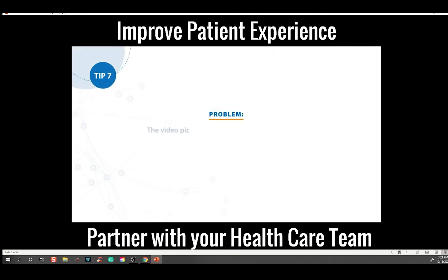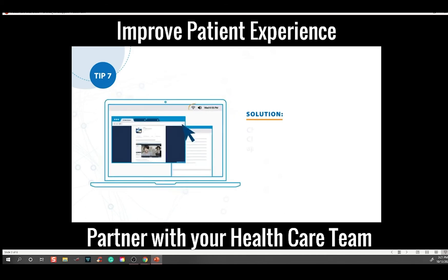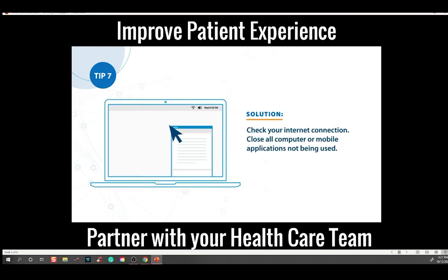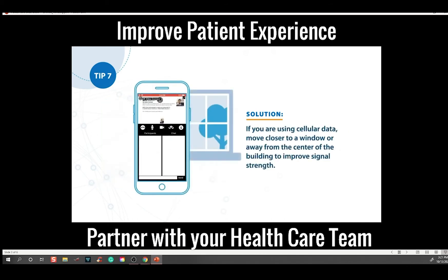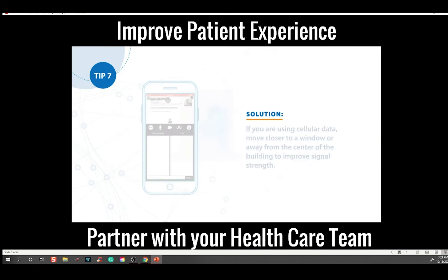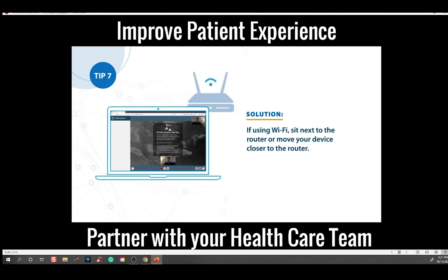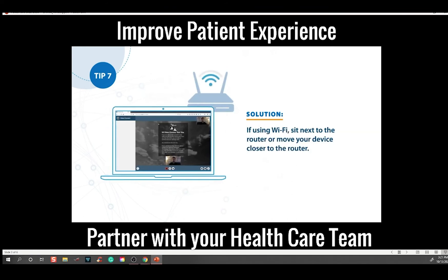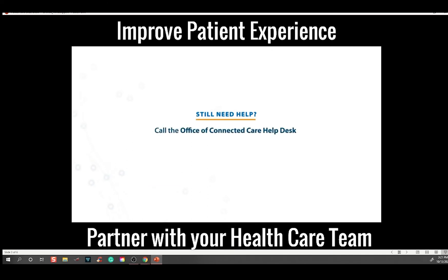Tip number seven. Problem: The video picture freezes or audio cuts in and out. Solution: Check your internet connection. Close all computer or mobile applications not being used. If you are using cellular data, move closer to a window or away from the center of the building to improve signal strength. If using Wi-Fi, sit next to the router or move your device closer to the router. Still need help? Call the Office of Connected Care Help Desk at 866-651-3180 or 703-234-4483.